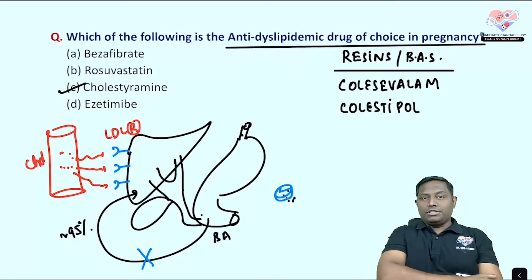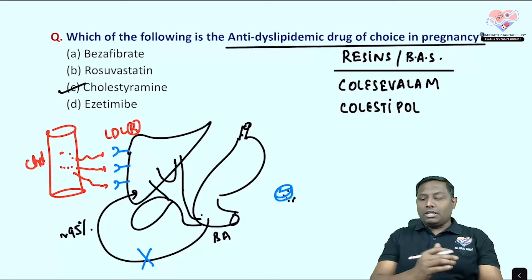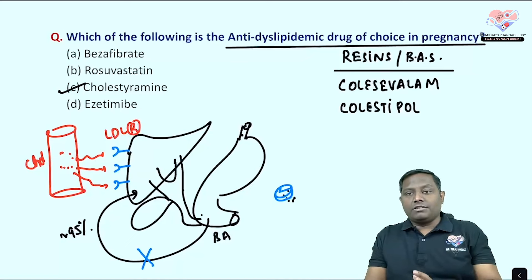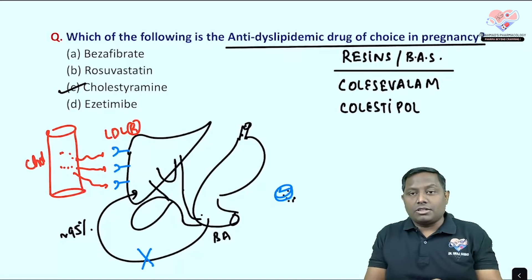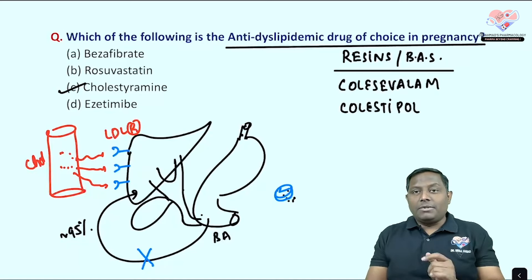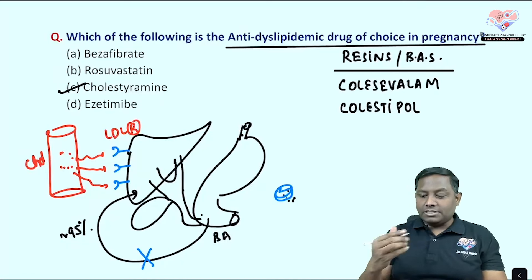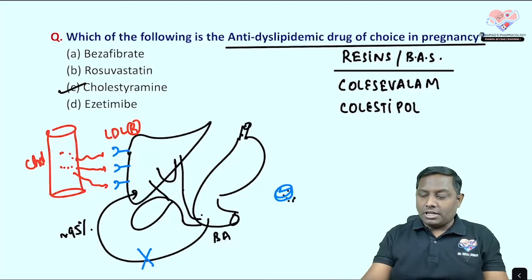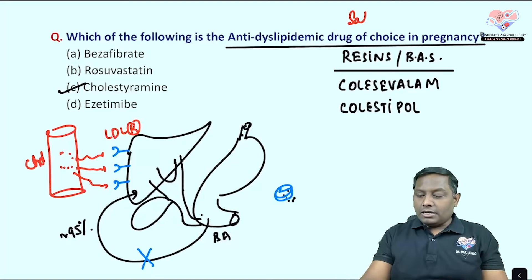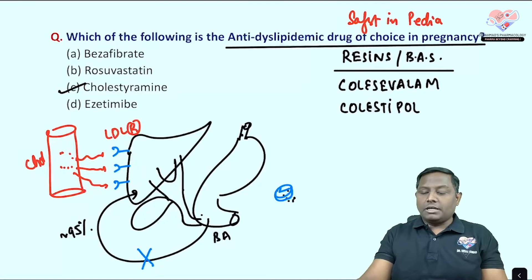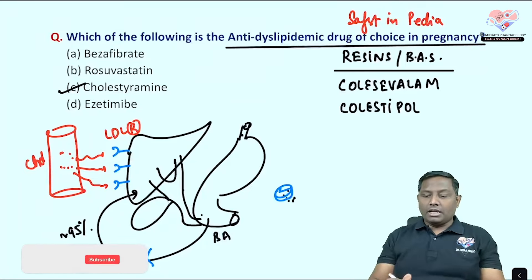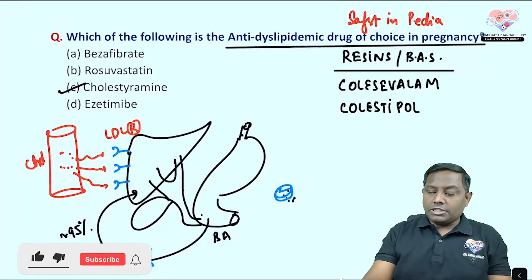Since the site of action is in the GI tract and not in systemic circulation, bile acid sequestrants are considered the safest antidyslipidemic drugs in pregnancy and also in the pediatric population.